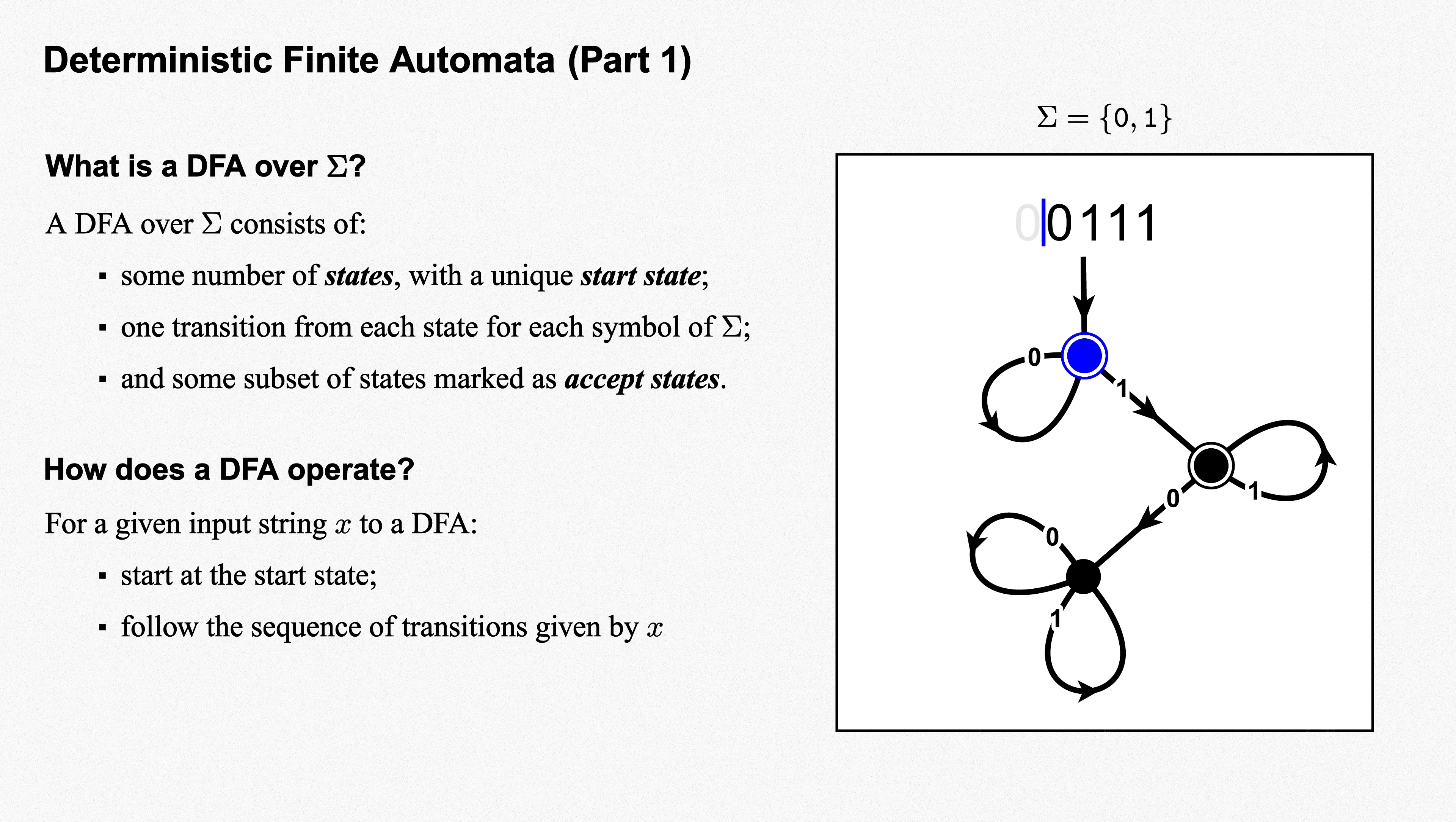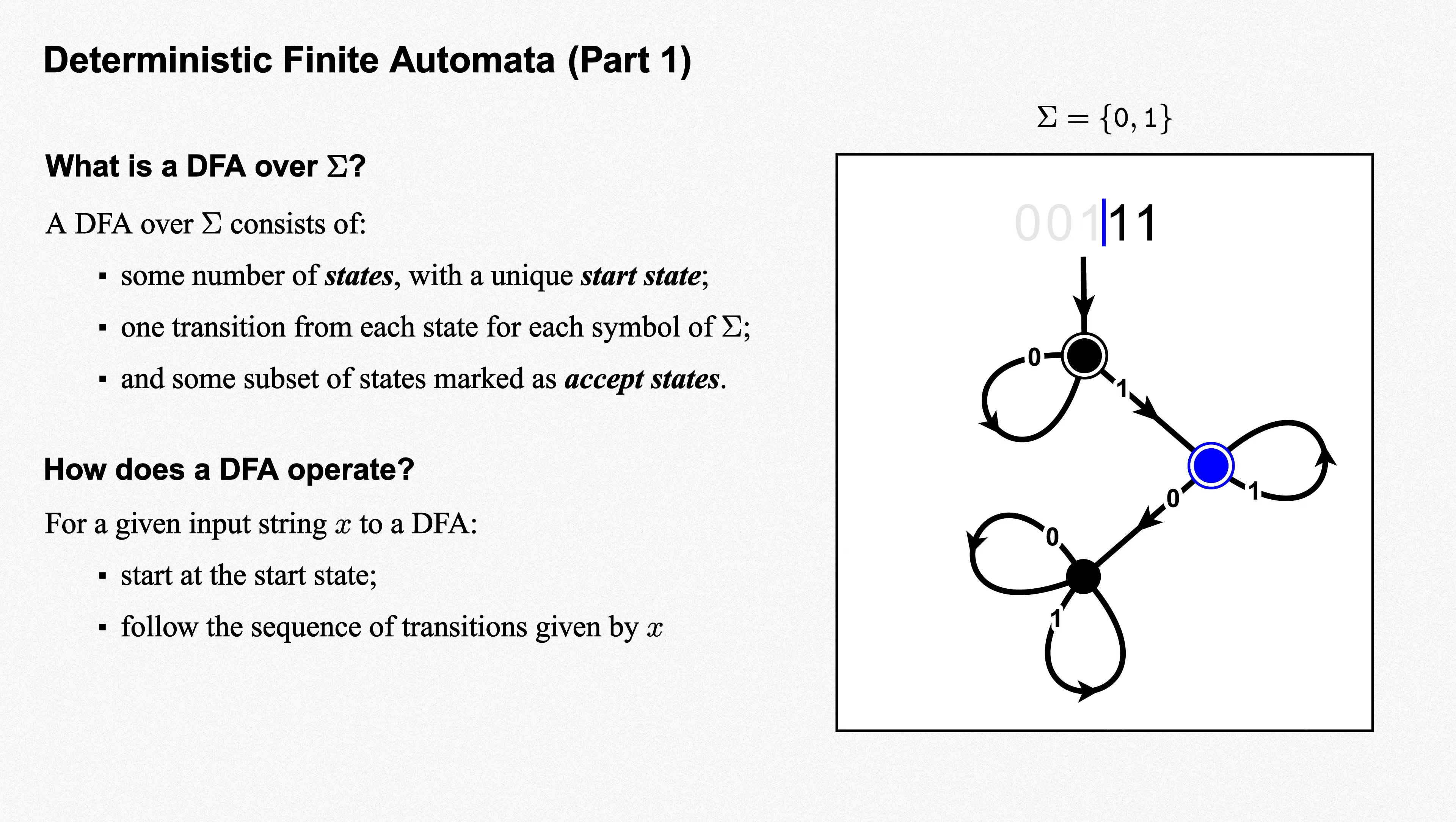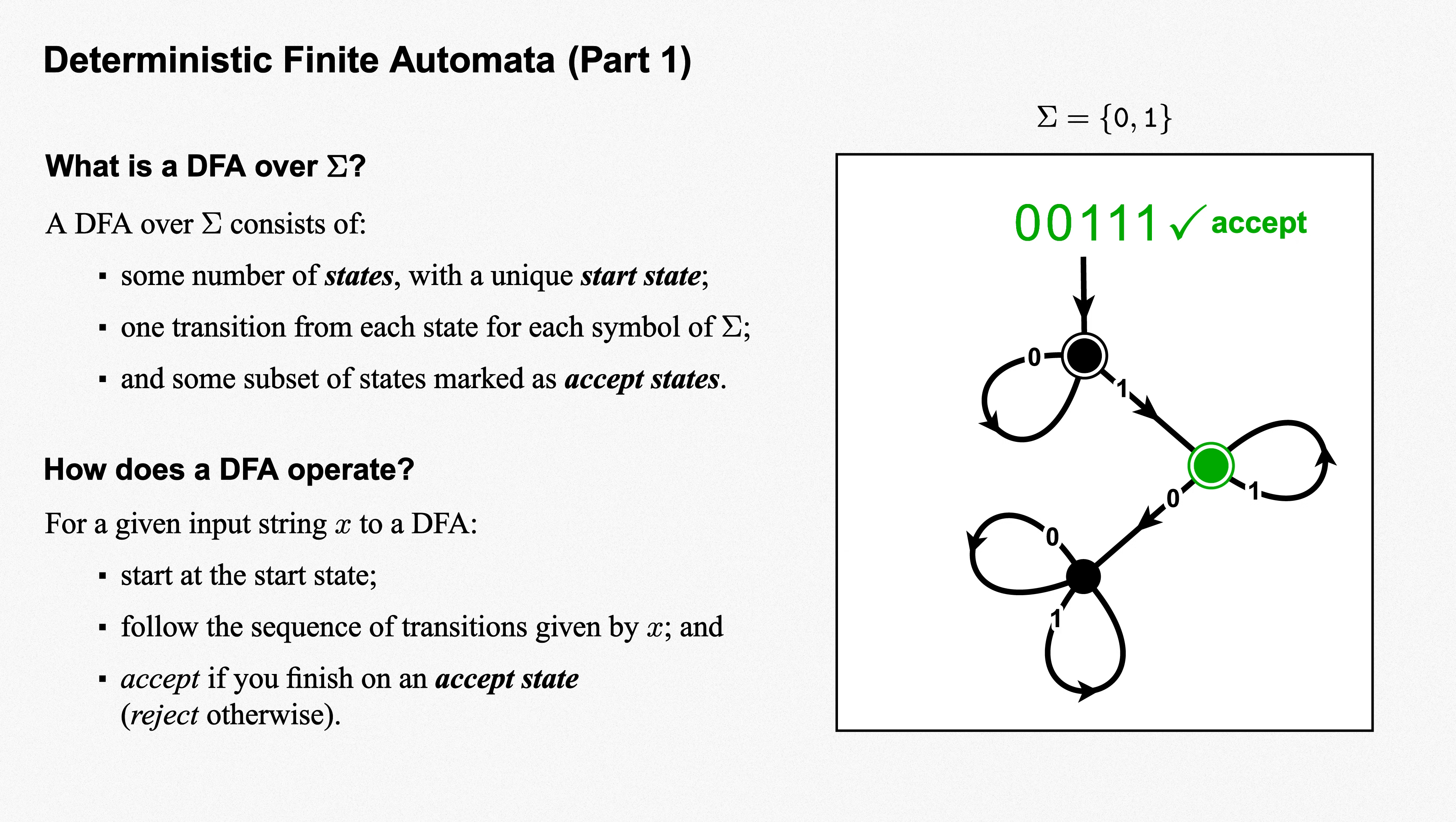The first zero returns us to the start state, as does the second zero. The first one takes us to the state at the right, and the two subsequent ones return us to that state. Now that we've reached the end of our string, we look at the state we've landed at. If it's marked as an accept state, our DFA accepts the string. If not, our DFA rejects the string. In this case, we've finished on an accept state, so this DFA accepts the string 00111.